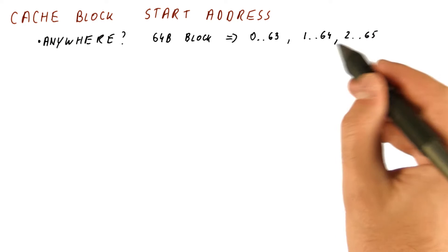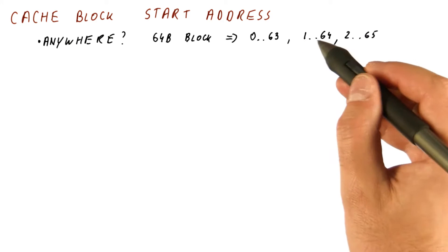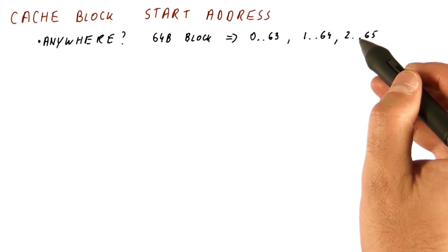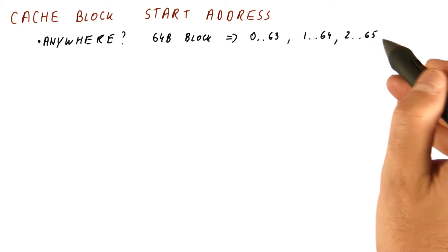So if the starting address of the block can be anywhere, then these are the possible blocks that we might fetch in our cache. This complicates things a lot.